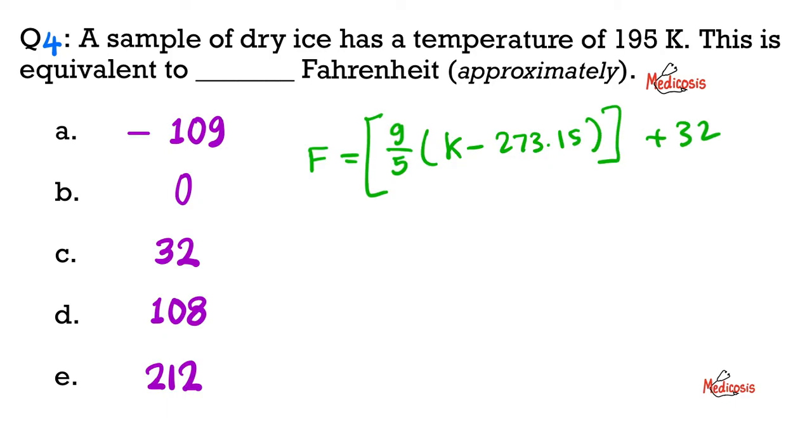I know my temperature in Kelvin, which is 195. You substitute it here, and you'll find that the temperature in Fahrenheit equals negative 108.67. So the closest thing that we have is choice A.